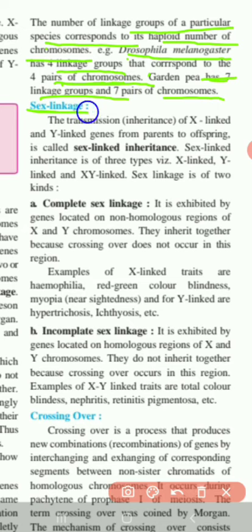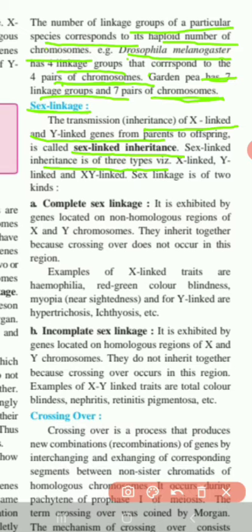Next topic is sex linkage. The transmission or inheritance of X-linked and Y-linked genes from parents to offspring is called sex-linked inheritance. Sex-linked inheritance is of three types: X-linked, Y-linked, and X-Y-linked. Sex-linked inheritance is also of two kinds: complete sex-linked and incomplete sex-linked.